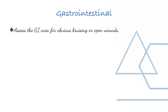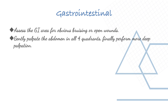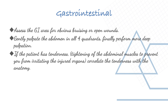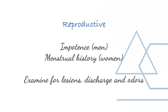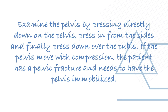For gastrointestinal assessment, assess for obvious bruising or open wounds and gently palpate the abdomen in all four quadrants, then perform deep palpation. If the patient has tenderness, tightening of abdominal muscles prevents irritation of injured organs; correlate tenderness with anatomy. For genitourinary, ask about nocturia, dysuria, urgency, or hesitancy; observe hygiene, skin conditions, lesions, and drainage. For reproductive, ask about impotence or menstrual history; examine for lesions and discharge. Examine the pelvis by pressing directly down and from the sides — if the pelvis moves with compression, the patient has a pelvic fracture and needs immobilization.